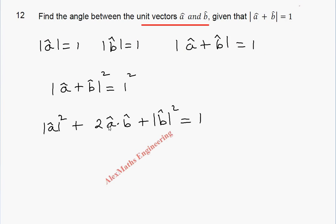And a cap dot b cap, we are going to apply the dot product formula. So mod a square plus 2 mod a cap mod b cap cos theta. So that theta is the angle between a cap and b cap plus mod b cap square equal to 1.